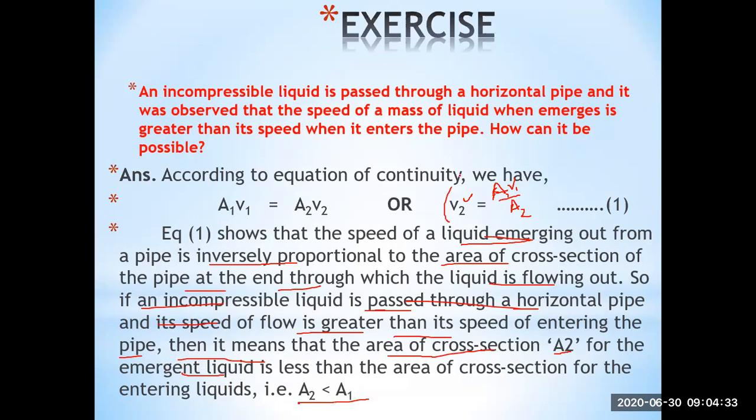This formula clearly explains the relation: when the area of cross-section is larger, speed will be less; when the area of cross-section is smaller, speed will be greater. This is in accordance with the equation of continuity.